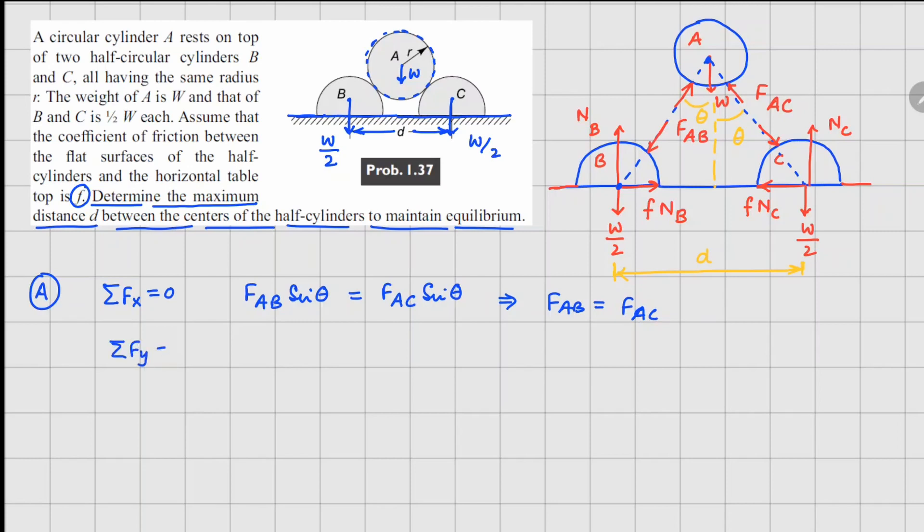Now the y direction force on this will be FAB cos theta plus FAC cos theta equals to W. Since FAB is equal to FAC, from this we can write down FAB equals FAC is equal to W divided by 2 cos theta.